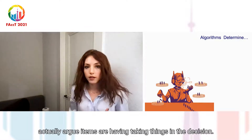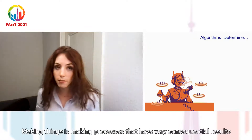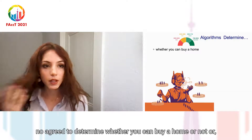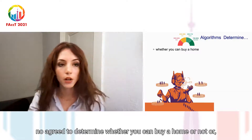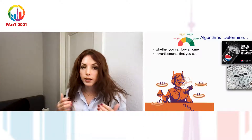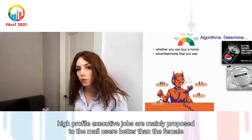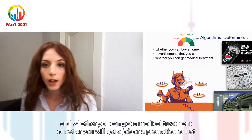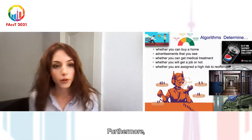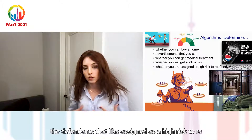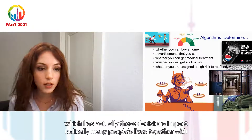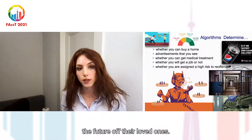Algorithms are now taking on decision-making processes that have very consequential results in our daily lives. For example, algorithms now determine whether you can buy a home, or which advertisements you see — and it turns out that advertisements for high-profile executive jobs are mainly proposed to male users rather than female users. Whether you can get medical treatment, or a job or a promotion, is determined by algorithms. Furthermore, defendants assigned as high-risk to re-offend are also determined by algorithms, with decisions that radically impact many people's lives together with the futures of their loved ones.